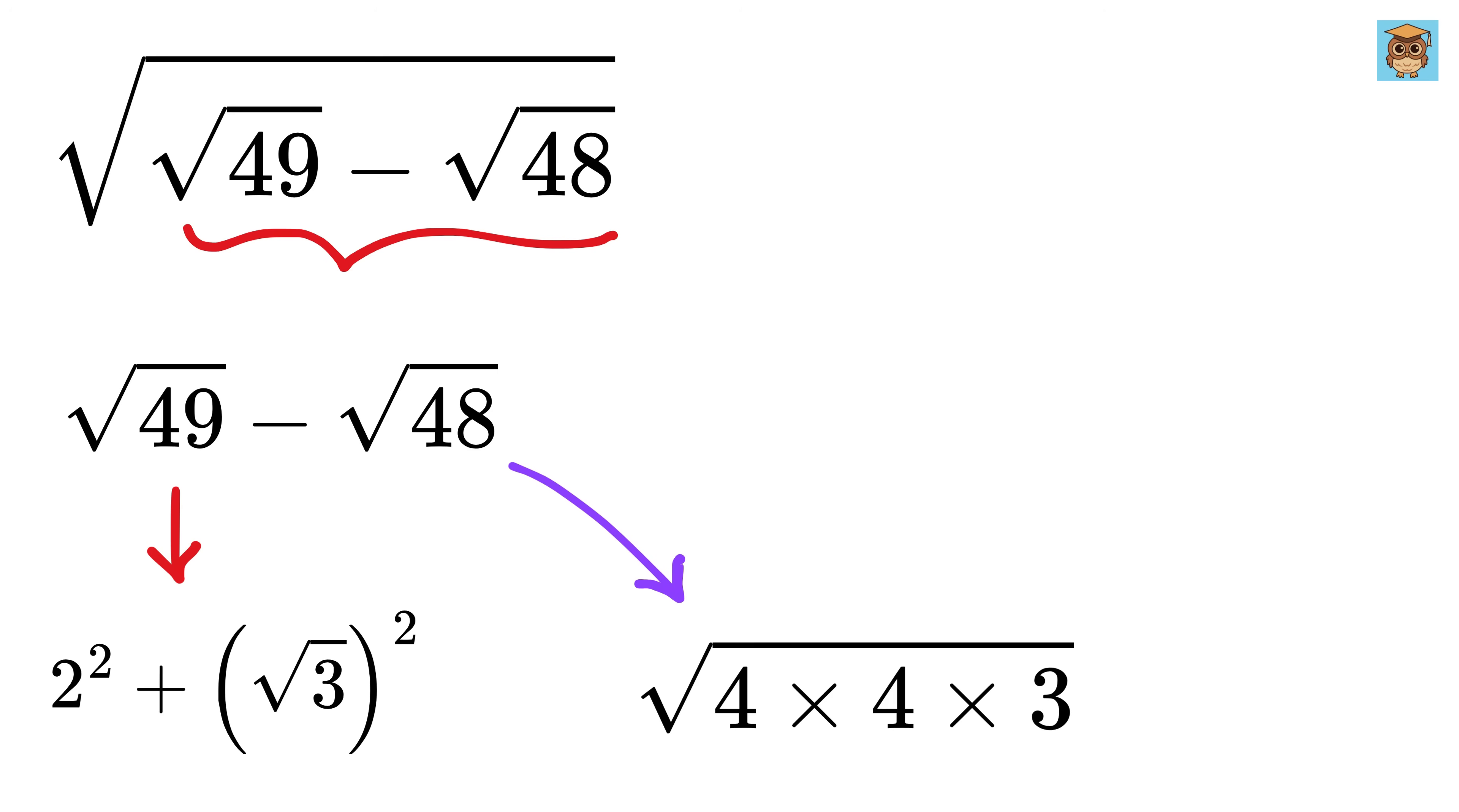So now, the square root of 48 becomes the square root of 4 times 4 times 3. Now we can write it as square root of 4 times square root of 4 times square root of 3. Write both these square roots of 4 as 2 and keep this square root of 3 as it is.